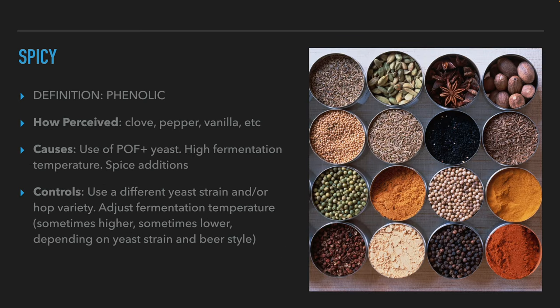Now we will move on to spicy flavors. Flavors of spices are also types of phenols. We perceive these flavors as clove, black pepper, vanilla, and other spices. The causes of such flavors can be the use of yeast that produce phenols, such as German wheat beers that produce the taste and aroma of cloves. This can be caused by too high fermentation temperatures or the addition of spices. To control the appearance of phenols, the brewer should consider using a different yeast strain that cannot produce phenols, lower the fermentation temperatures depending on the strain, and make sure that there is no wild yeast contamination that could create these compounds. In addition, check the use of spices and balance to create a pleasant aroma.